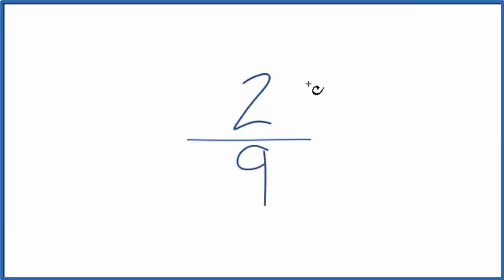If you need to simplify the fraction two ninths, here's how we can do that. What we want to do is find another fraction that's equivalent to two divided by nine. It has the same decimal value, it's just that we've reduced it to lowest terms.